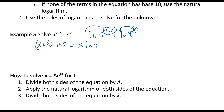Natural log of 5 is just a number, and natural log of 4 is just a number — these aren't variables. The variables we have are the x in each case. Distributing gives us x·ln5 + 2·ln5 equals x·ln4.